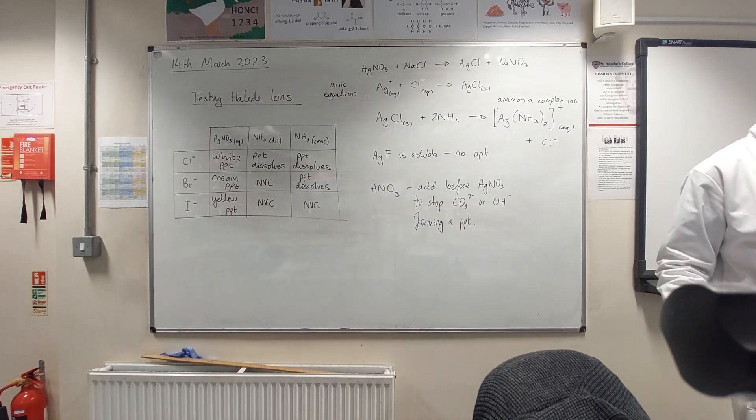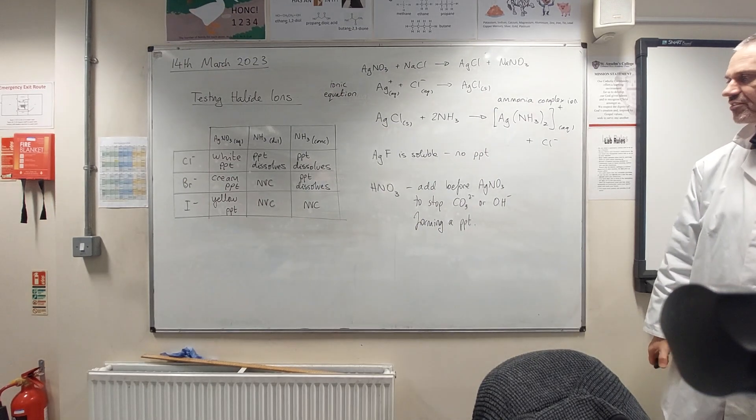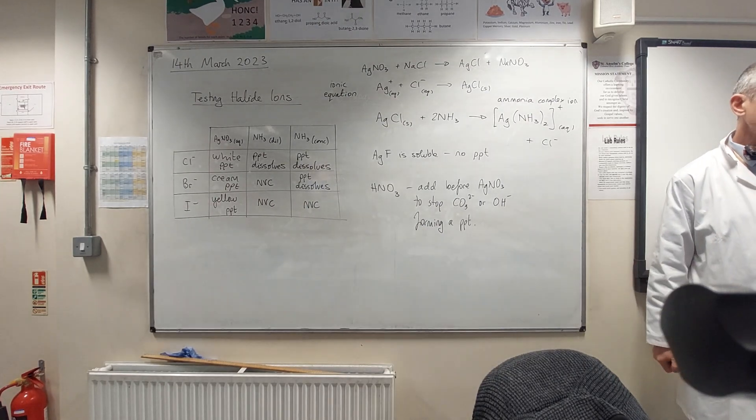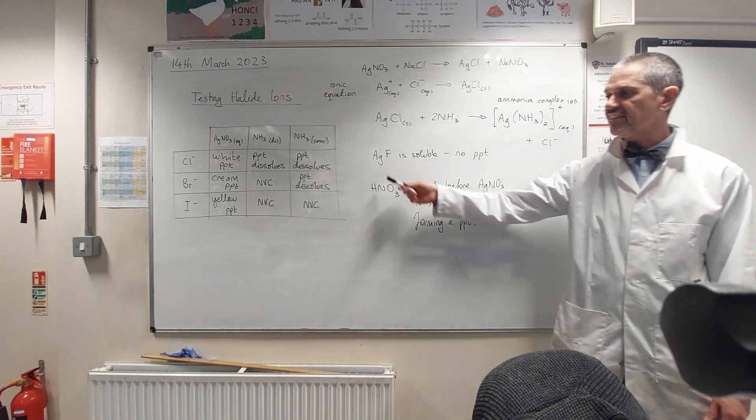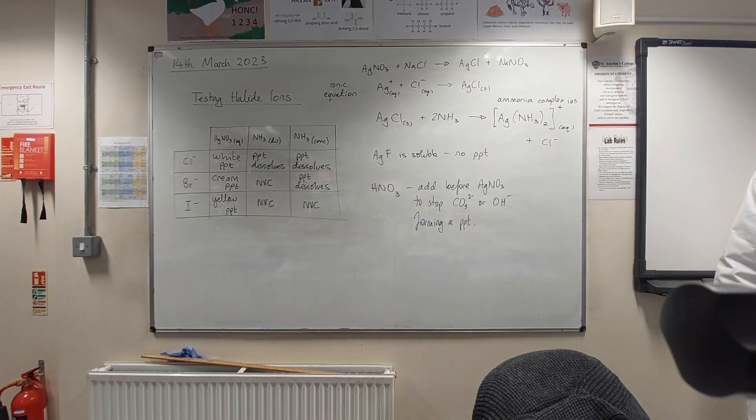So you add the silver nitrate, sorry, you add the nitric acid first before the silver nitrate to stop other ions like carbonate or hydroxide forming a precipitate, what we sometimes call a false positive. You know, if you had a solution of sodium hydroxide, that will give you a precipitate with silver nitrate as well. So we chuck in a bit of acid first. We will see that again in when we look at group two chemistry.